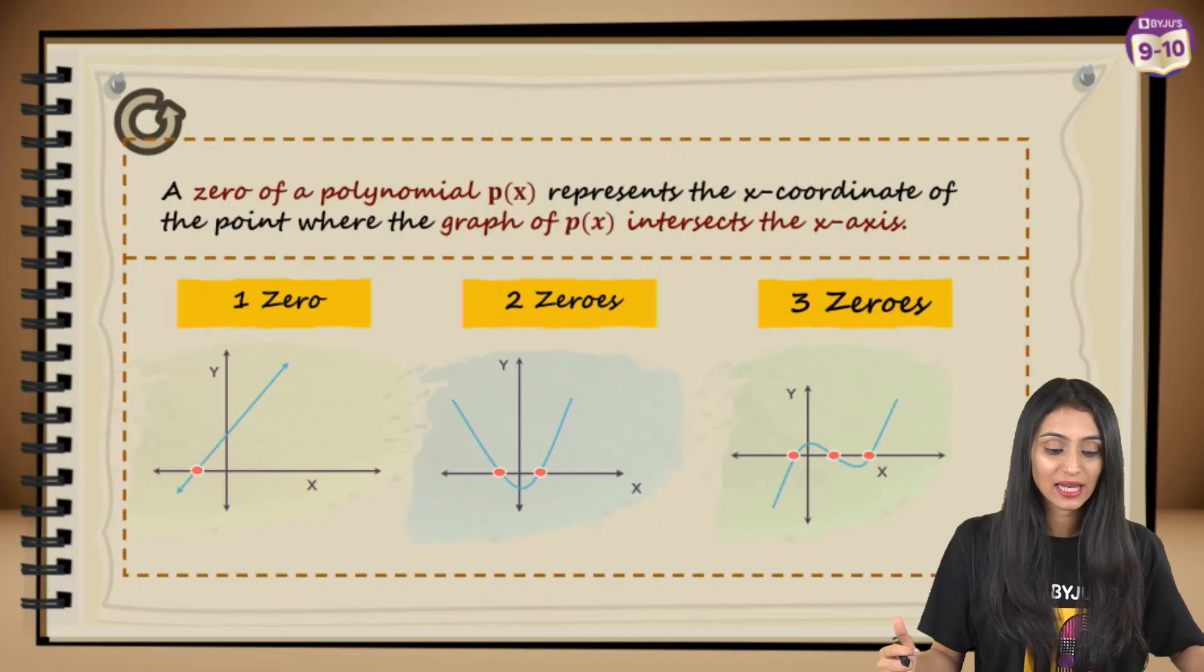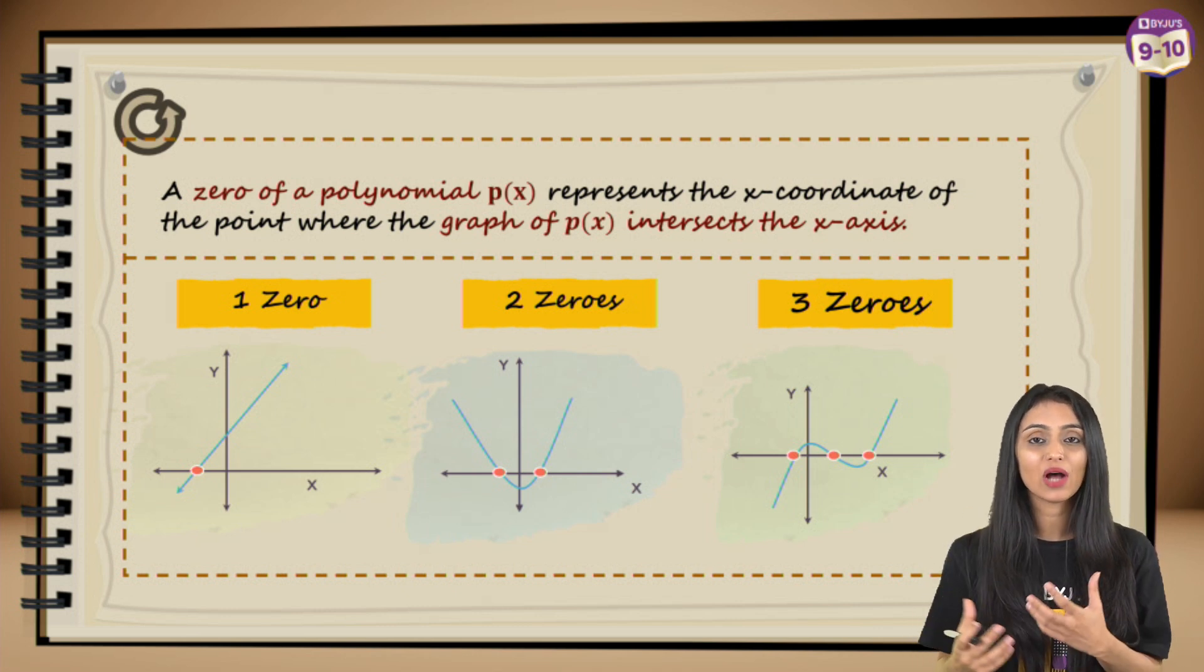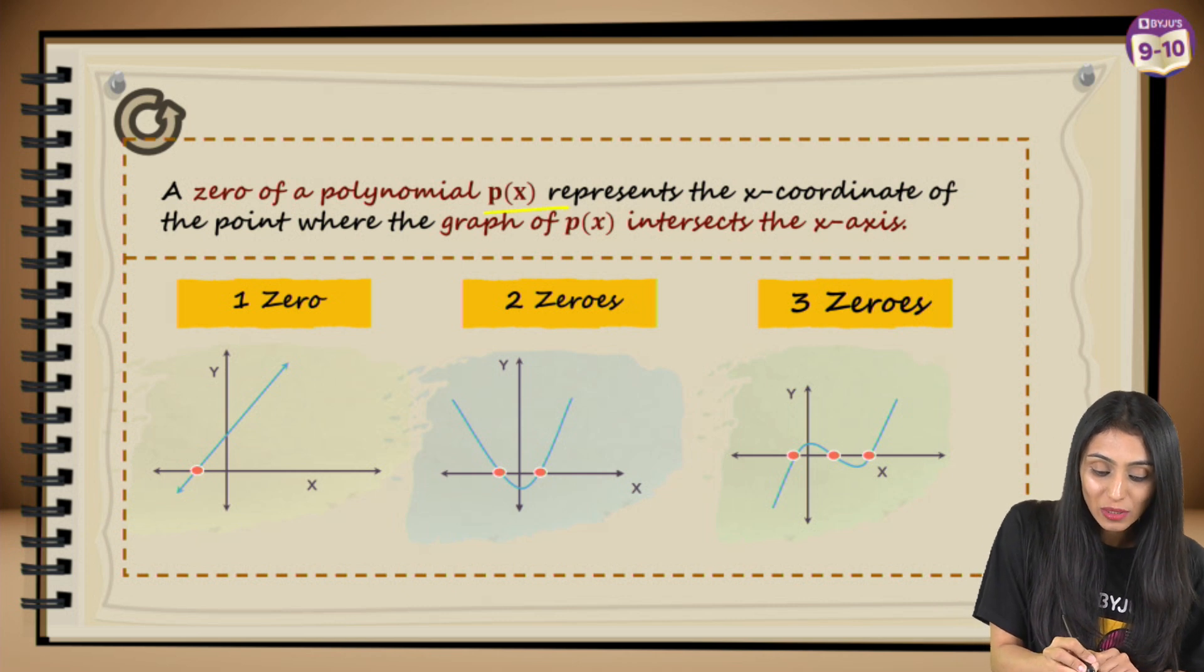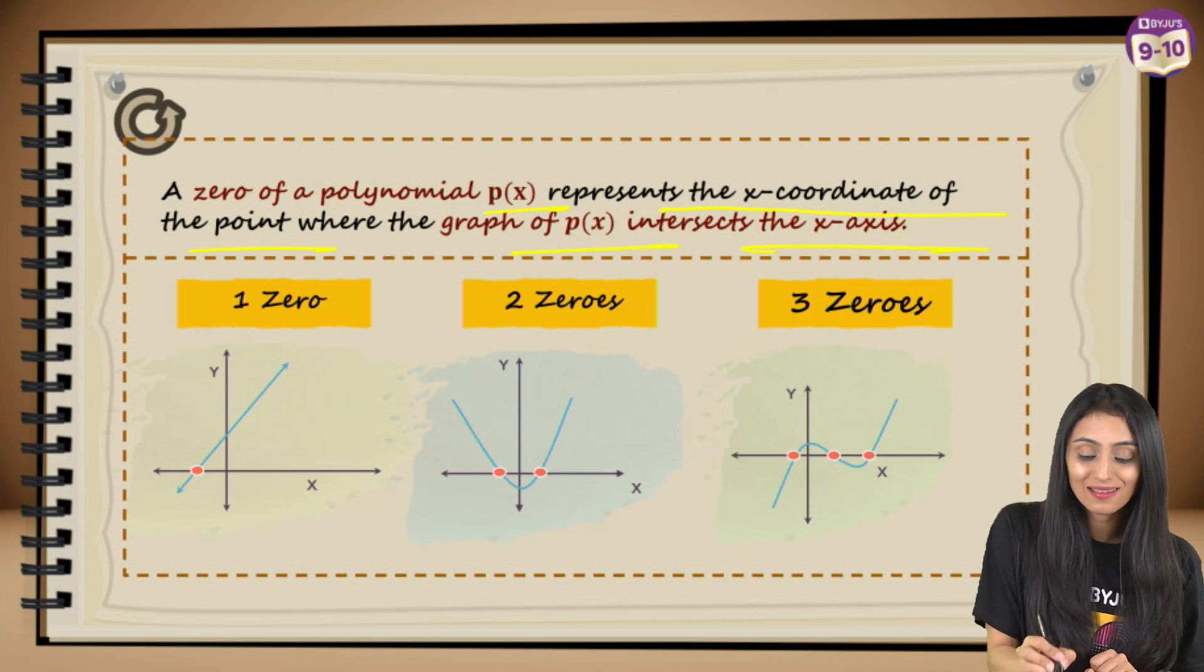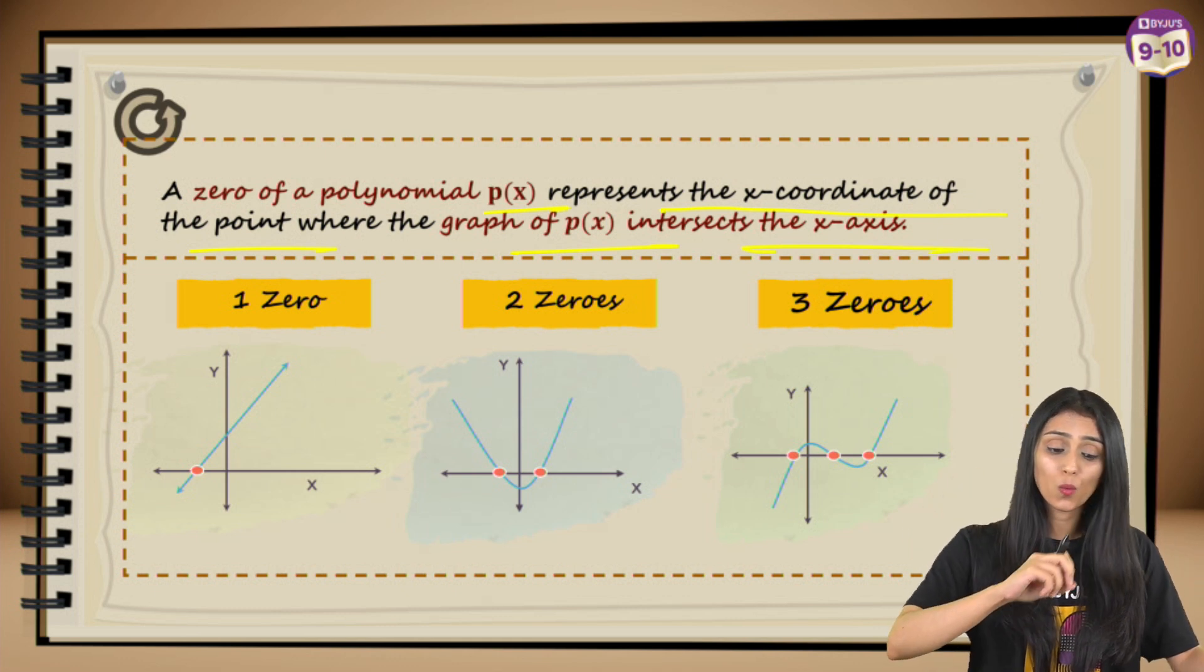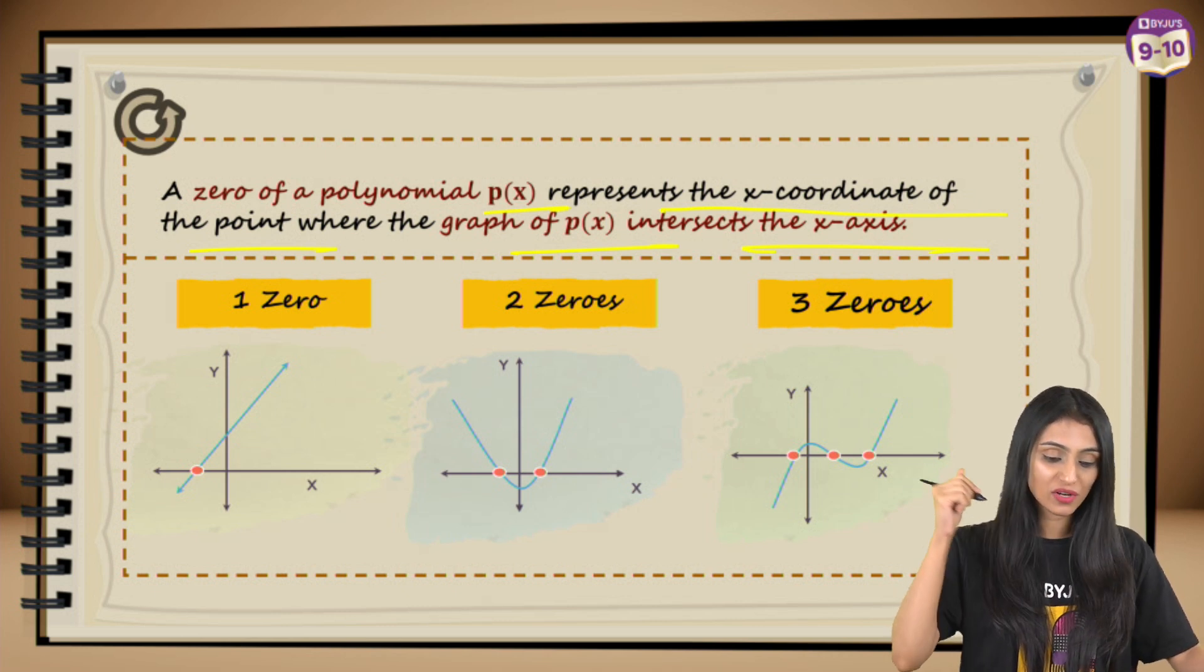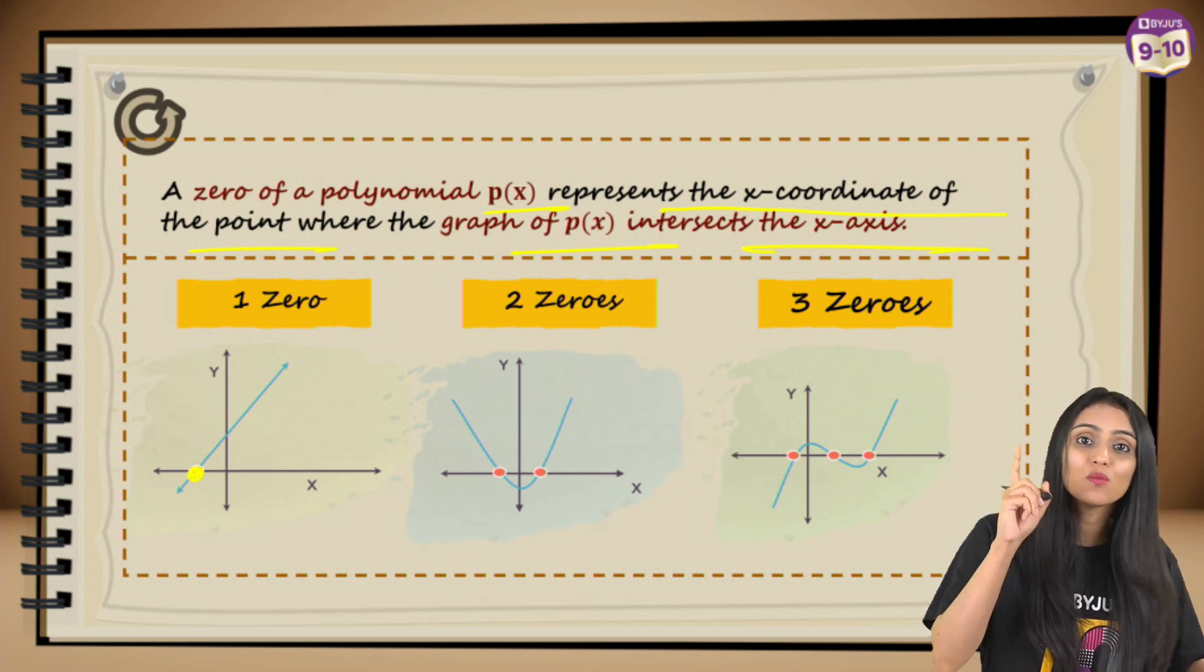Let's move ahead to the next topic. When we're talking about the zero of the polynomial by looking at the graph, how can we tell how many zeros this polynomial has? A zero of a polynomial p(x) represents the x-coordinate of the point where the graph of p(x) intersects the x-axis. On the graph you have to see where the line is intersecting the x-axis.